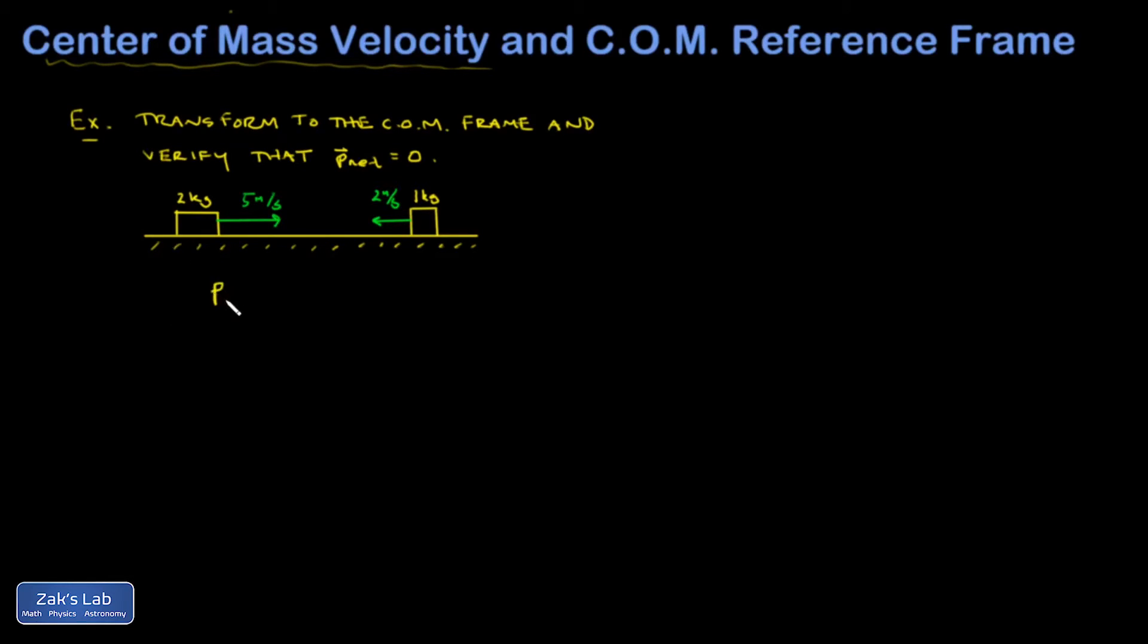So just to remind you, we found out the net momentum of a system of particles is given by the total mass times the center of mass velocity. So as this large block slides to the right rather fast and the small block slides to the left rather slow, I can see that the center of mass should be getting dragged to the right. So more mass is further to the right on average as these blocks proceed. So my center of mass velocity should be something to the right.